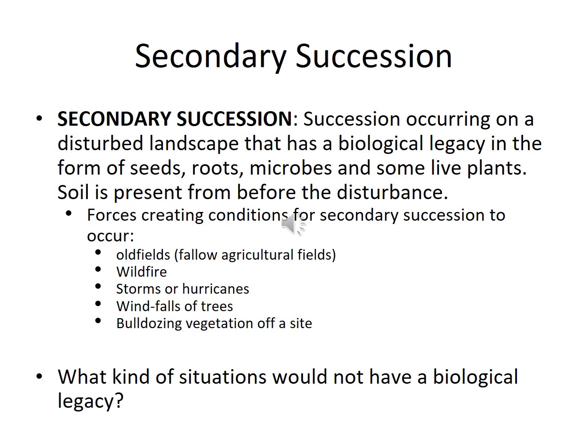Secondary succession is directional change of a plant community on a disturbed piece of land that retains some biological legacy — seeds, roots, microbes, some plants, some soil present from before the disturbance. Things that create conditions for secondary succession include crop fields left fallow, fire passing through chaparral, forests, or prairies, hurricanes, and trees falling. In these cases something living remains from which the community can rebuild.